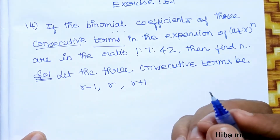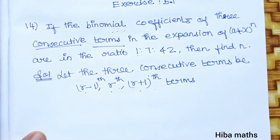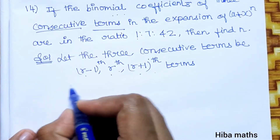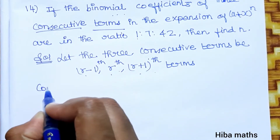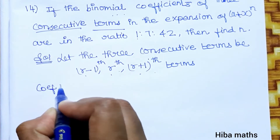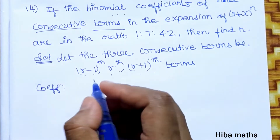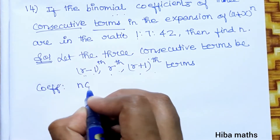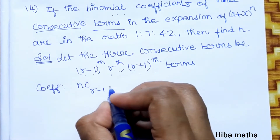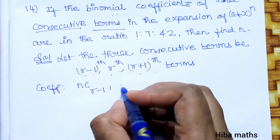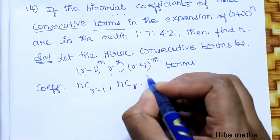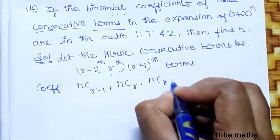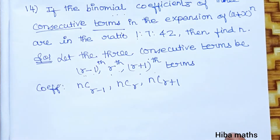For each term, we identify the binomial coefficient. The coefficient of term r-1 is nCr-1, the coefficient of term r is nCr, and the coefficient of term r+1 is nCr+1.